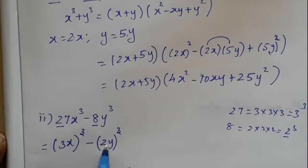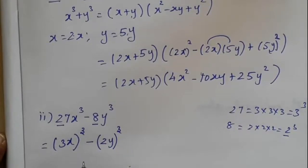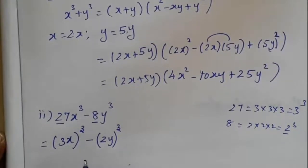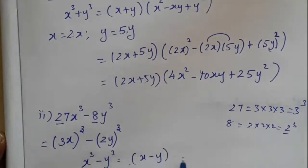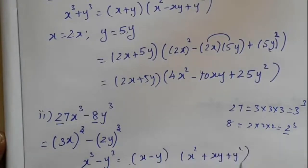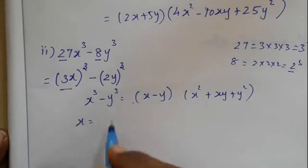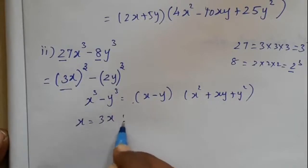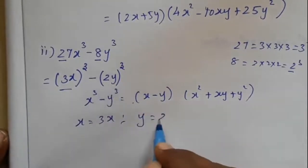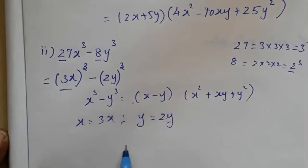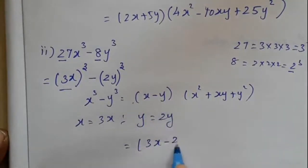Now we will see a formula: x cubed minus y cubed. Let's see the formula — xy plus y squared. We know the formula. What do we need to do with x? We replace x with 3x, and y with 2y. x is equal to 3x, y is equal to 2y. We need to apply this formula.